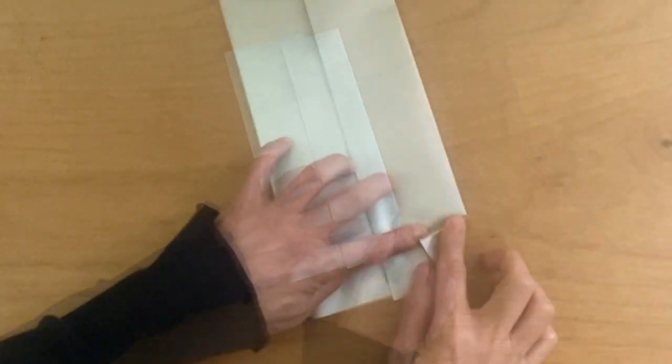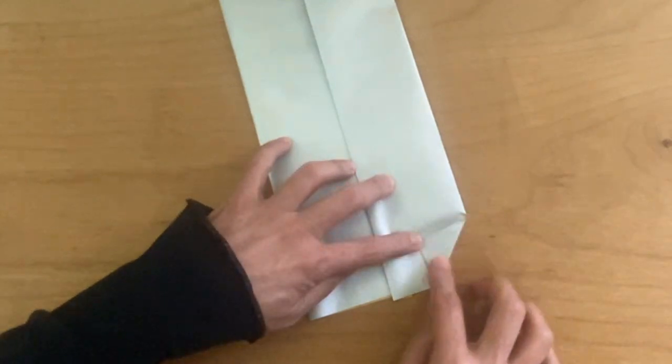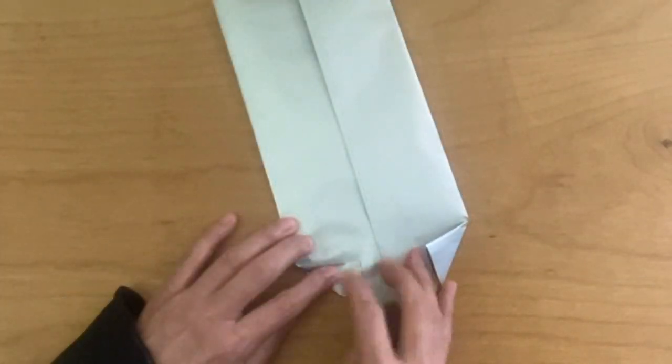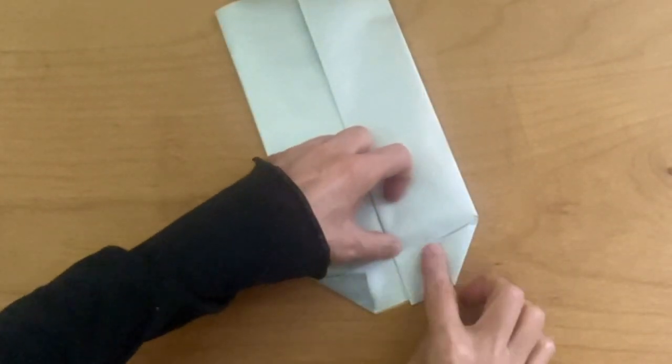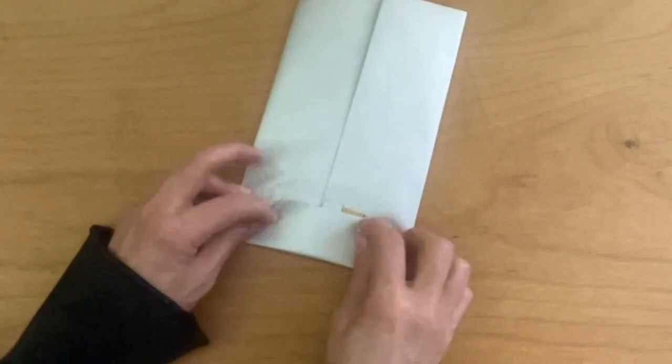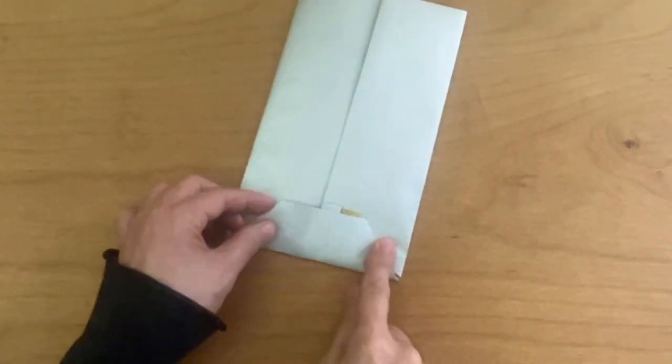Start from the bottom. Fold both corners like this. Mark the envelope thickness. Fold the bottom top up, then fold it inward about one third.